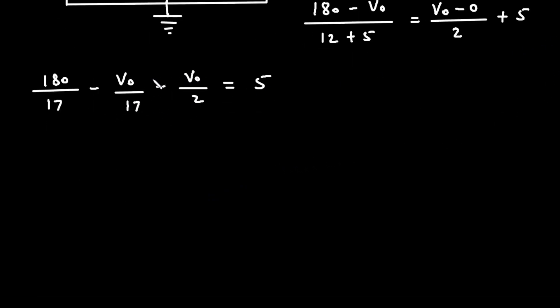We can take this VO common. So, if we take this VO common, then minus 1 upon 17 and minus 1 upon 2 is equal to 5. We can take this 180 upon 17 on right side. So, it will be minus 180 divided by 17.